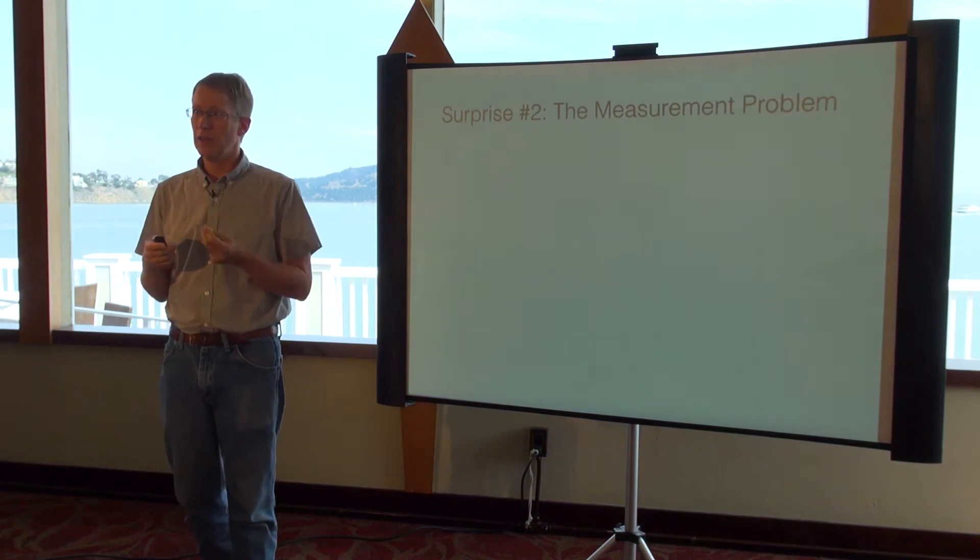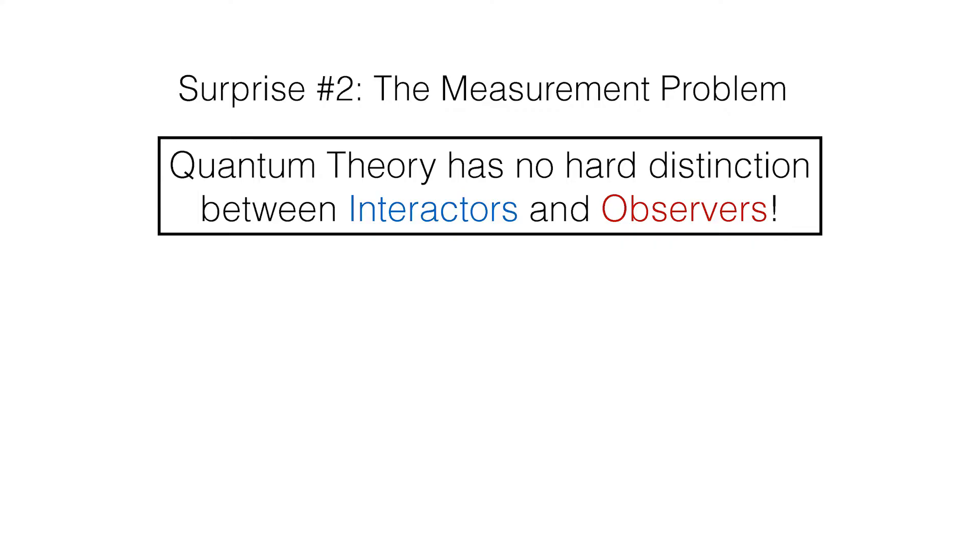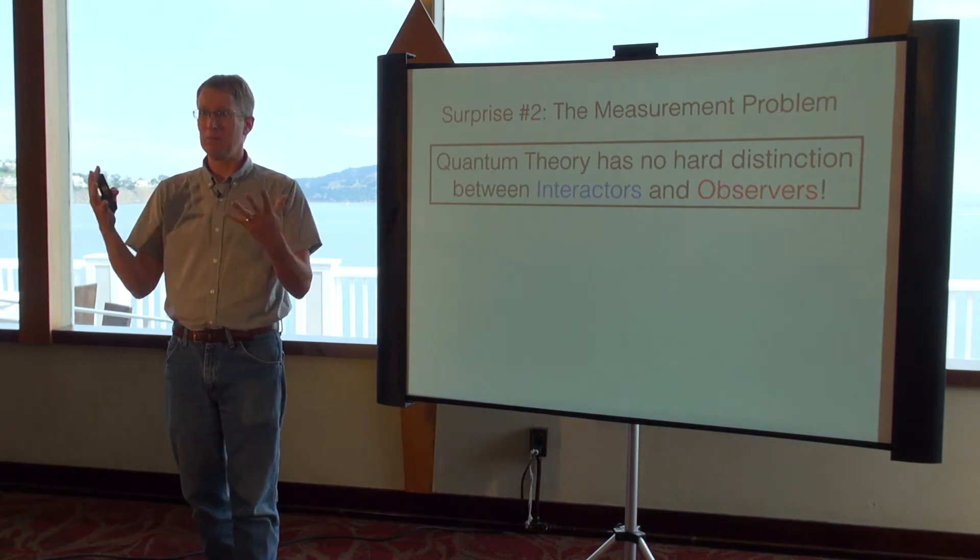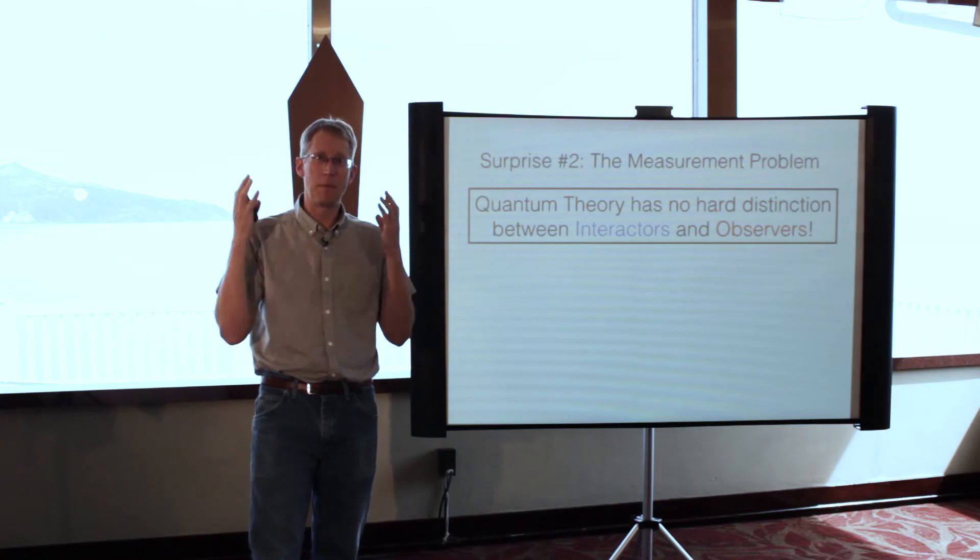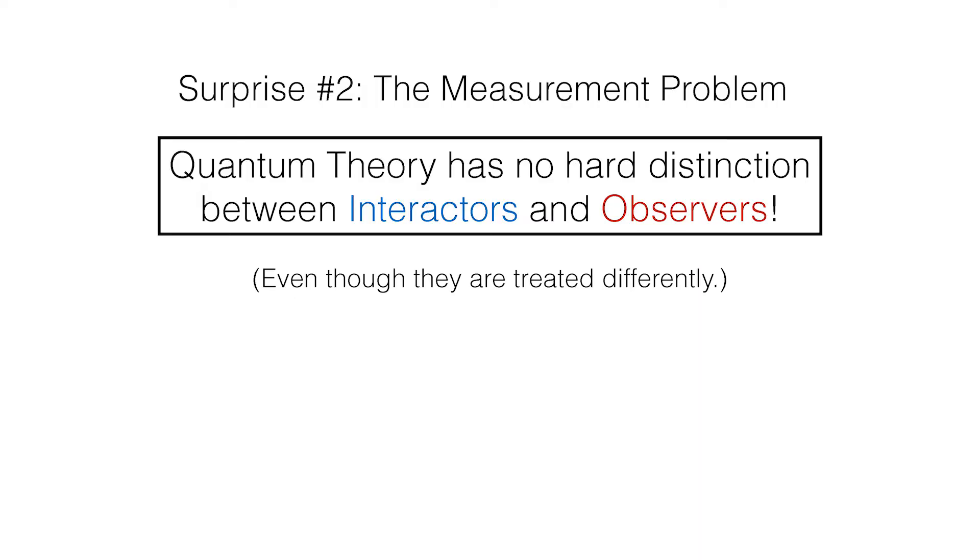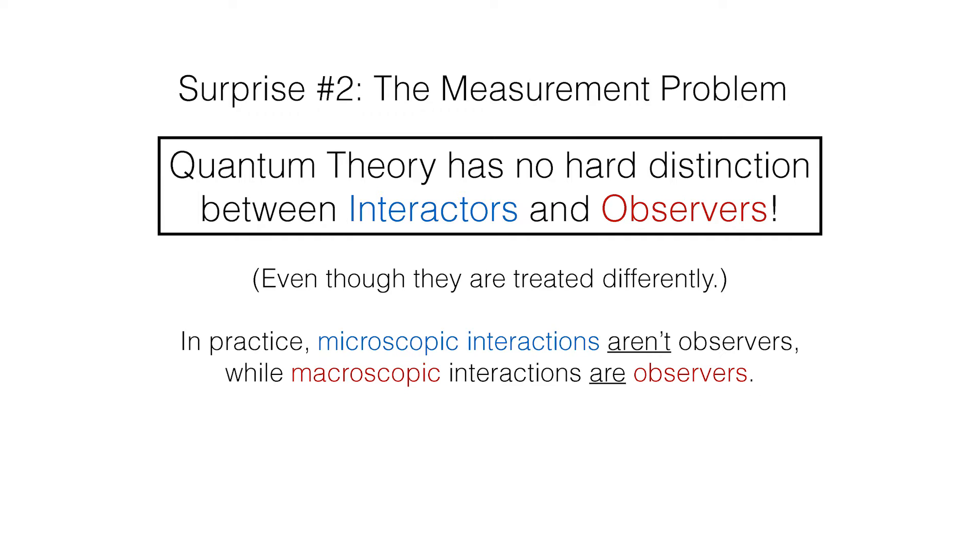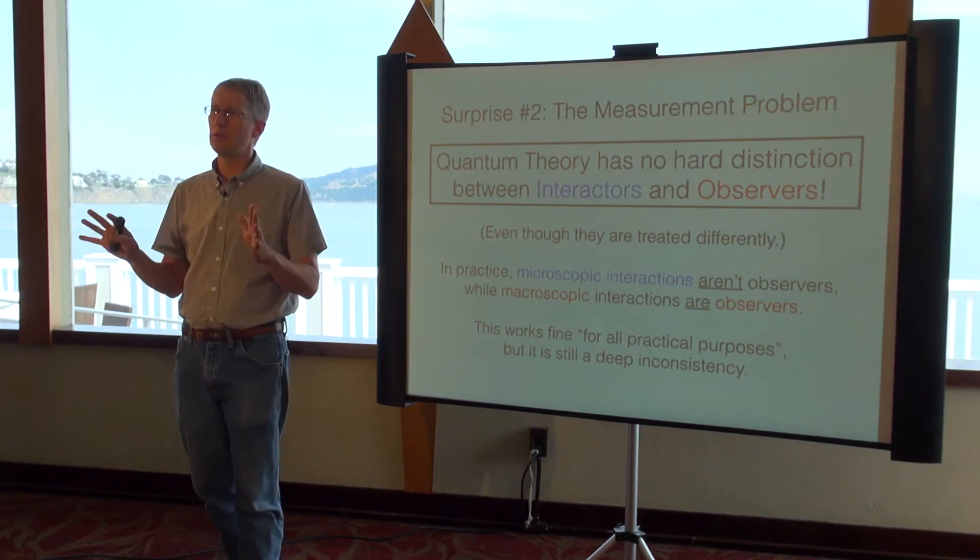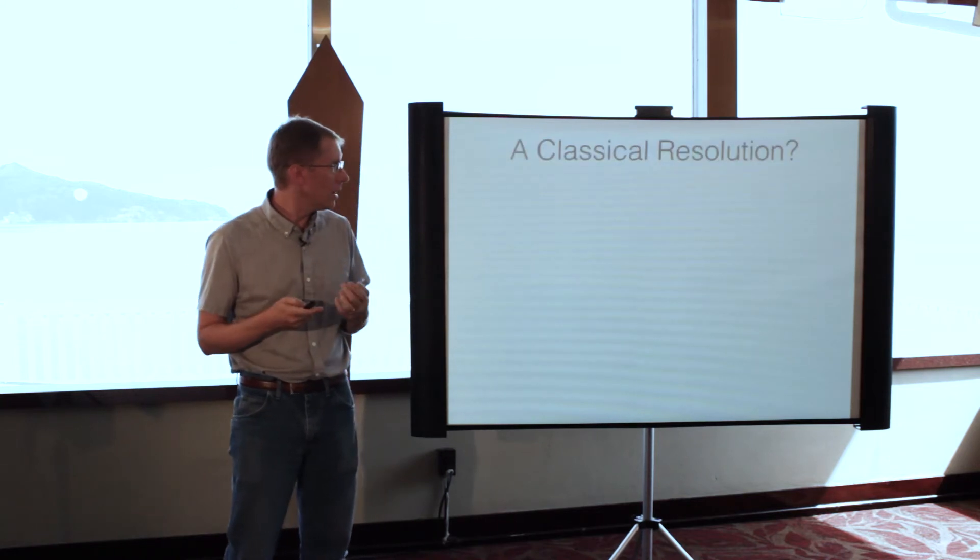Even more surprising, something that's often called the measurement problem, is that there's not really a fine line between what you consider to be an interactor and an observer. A camera is probably treated like an observer, but what about a dust particle, a virus, a buckyball? At what point does it stop being an interaction and start being an observation? This is important because they're treated differently in quantum theory. In practice, we just say if it's microscopic we treat it as an interaction; if it's macroscopic we treat it as an observer. In practice there's no problem, but we don't just want to solve it for practical purposes—we want to really understand what's going on at the deepest levels.